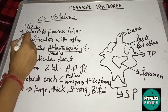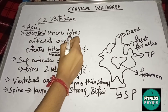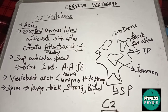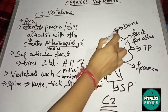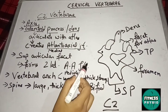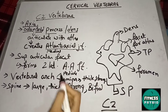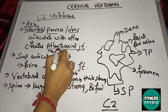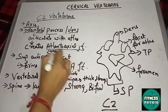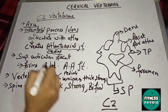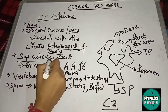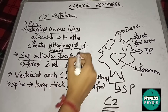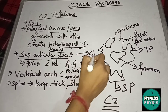The next vertebra is C2, also known as the axis. Its special feature is the odontoid process, also called the dens. The dens articulates with the anterior arch of the atlas to form the atlanto-axial joint — specifically the medial atlanto-axial joint.